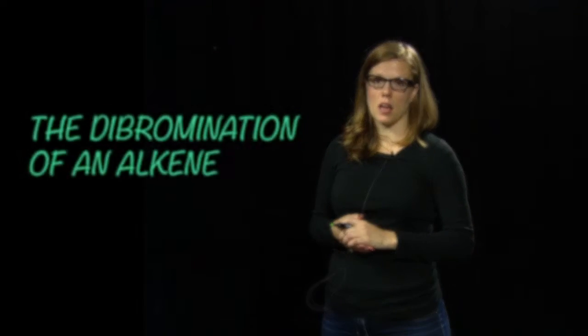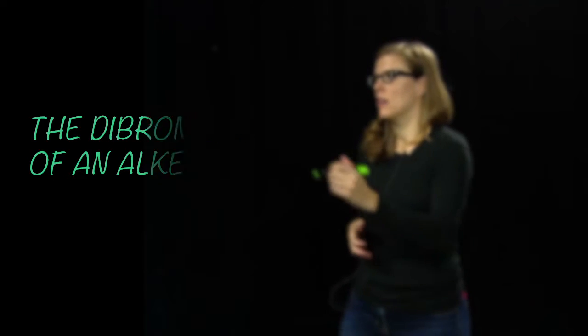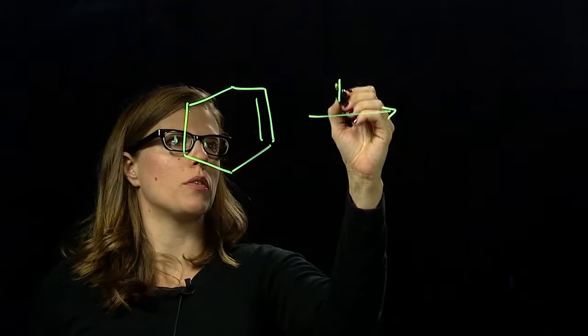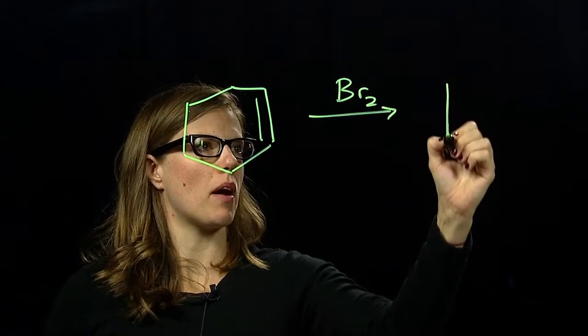Today we're going to talk about the dibromination of an alkene. We'll use cyclohexene as a substrate and add Br2 across the double bond.